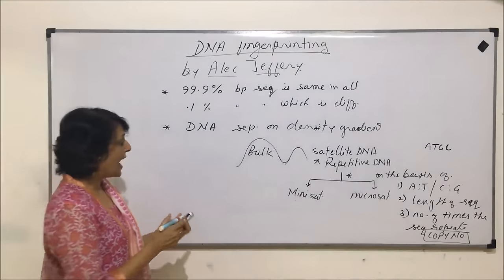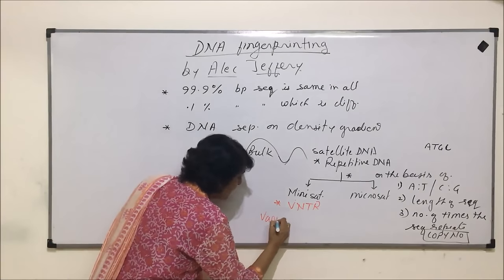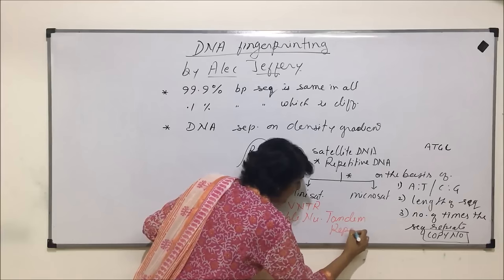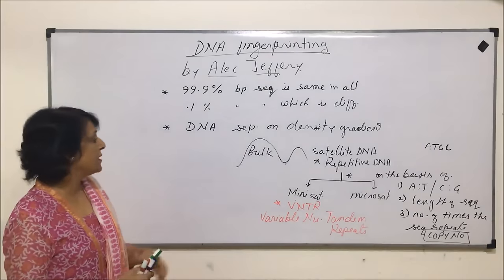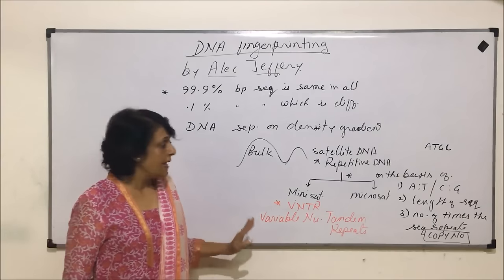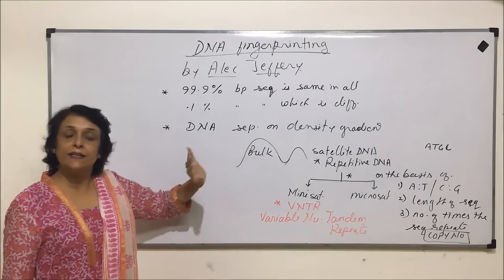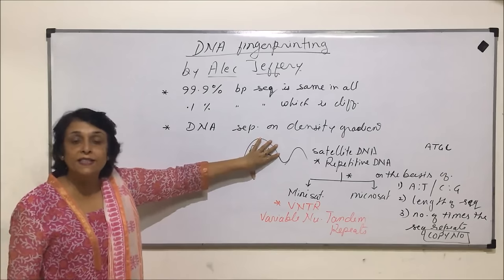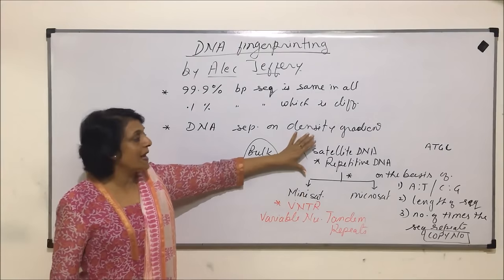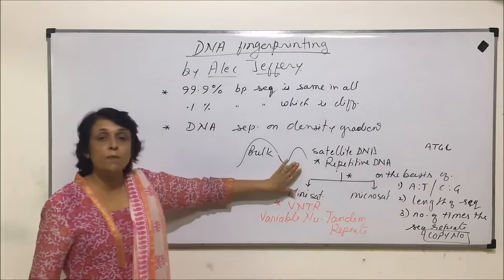Mini satellites are used as VNTRs — Variable Number Tandem Repeats — which refers to how many times the sequence is getting repeated. These VNTRs are used as radio-labelled probes. When we separate the DNA, we get a bigger chunk called the bulk DNA, common in all individuals, and a smaller segment called satellite DNA, which has repetitive segments and is unique to every individual.